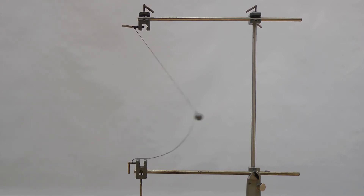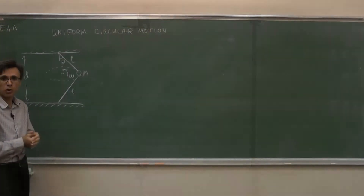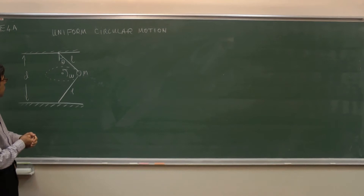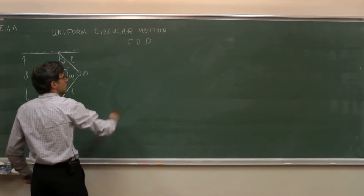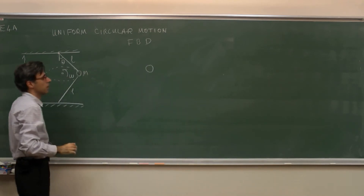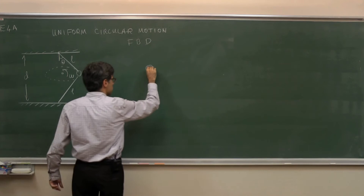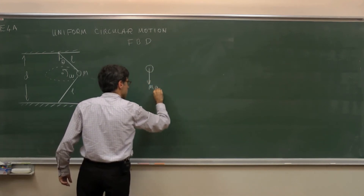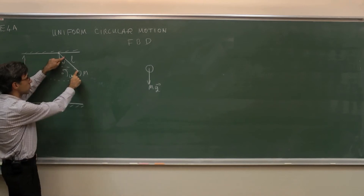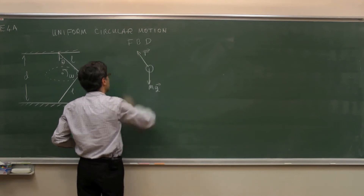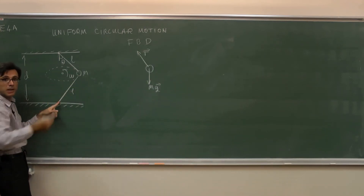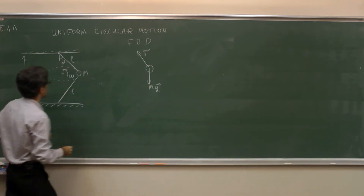Now let's analyze the problem. In order to solve it, we need to draw the free-body diagram. The forces acting on the object are: first the weight mg downward, then the tension T in the upper part of the string — an unknown. The tension in the lower string is zero, as we have seen, so we don't draw it at all.